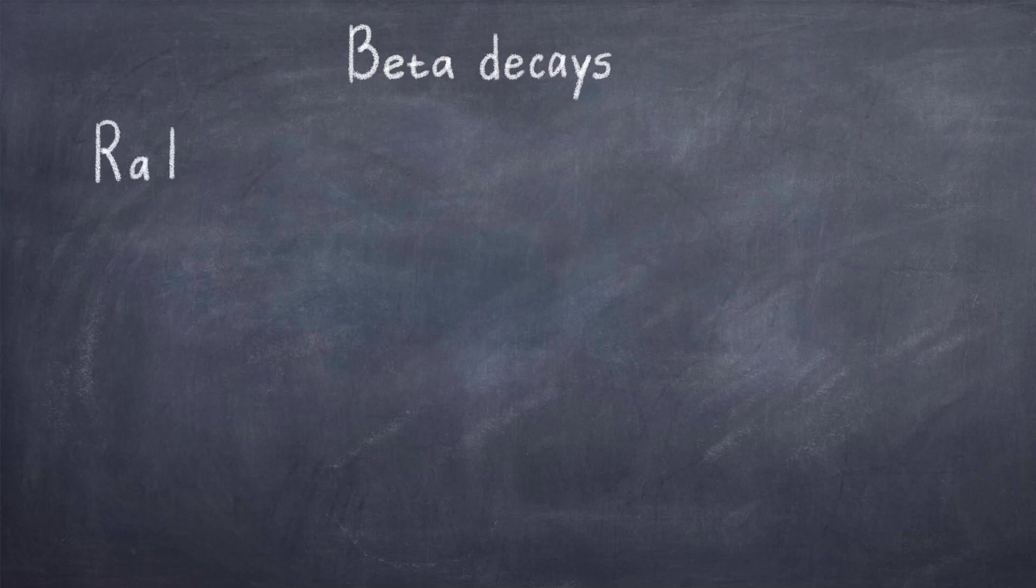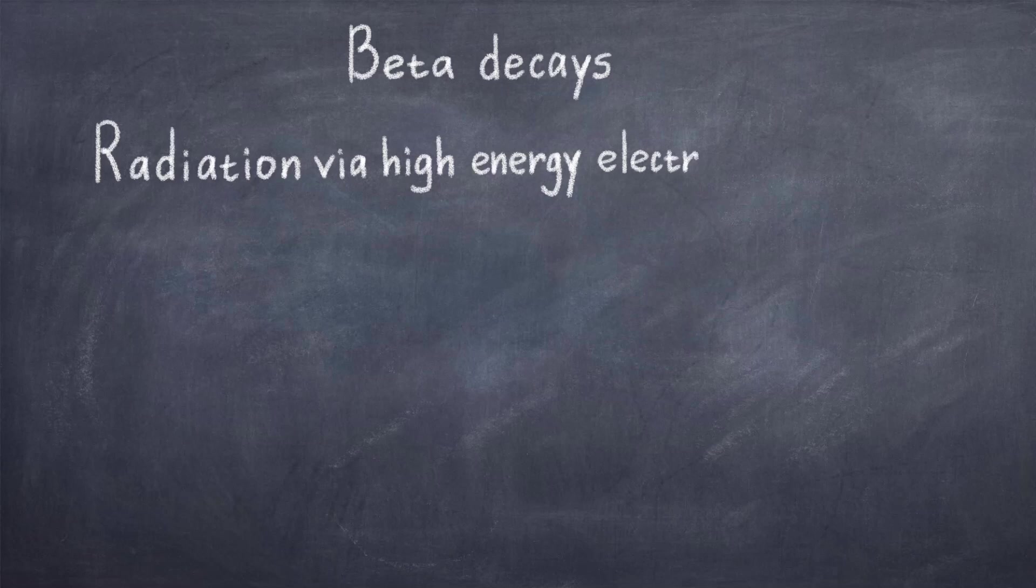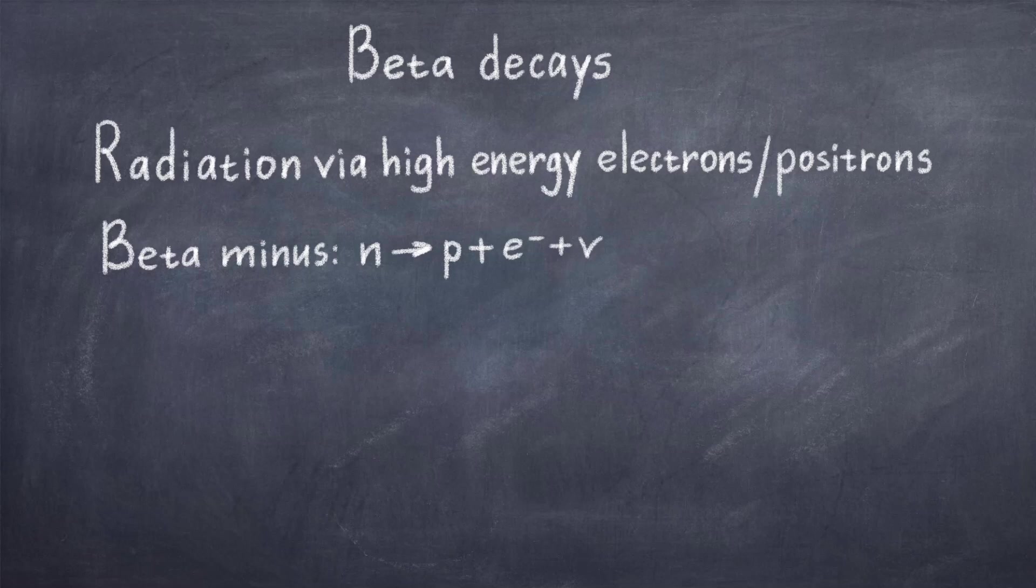The weak force is most famously known for being the force behind beta decays. Beta decays are when unstable atoms send out high energy electrons or positrons as radiation in order to eventually reach a more stable state. There are two types of decays, the beta plus and beta minus decay. This sign refers to the charge of the particle, thus the beta minus decay is when an electron, which has a negative charge, is emitted. Likewise, a beta plus decay is when a positively charged positron is emitted.